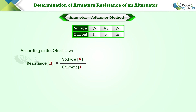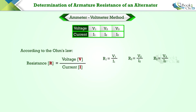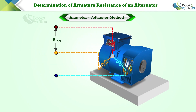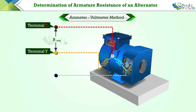Substitute the voltage and current values in the table to calculate the resistance for all three sets of readings. Now determine the average value of these three resistances. This average resistance is the value of resistance across the two terminals of the alternator, since two windings are connected in series.